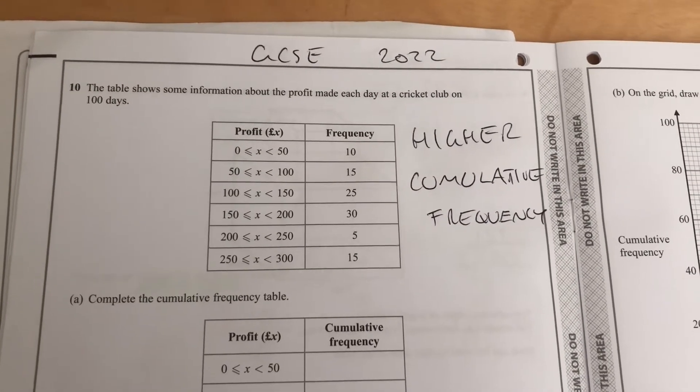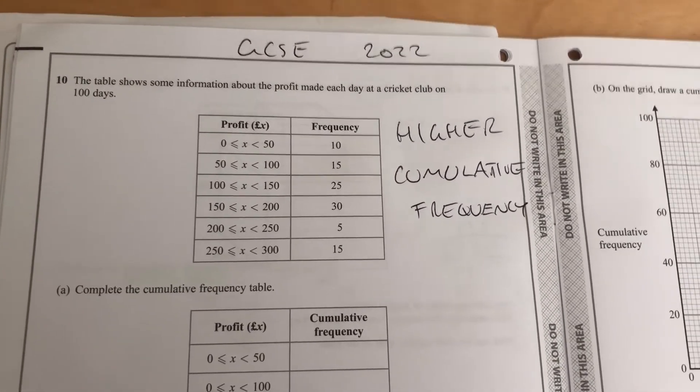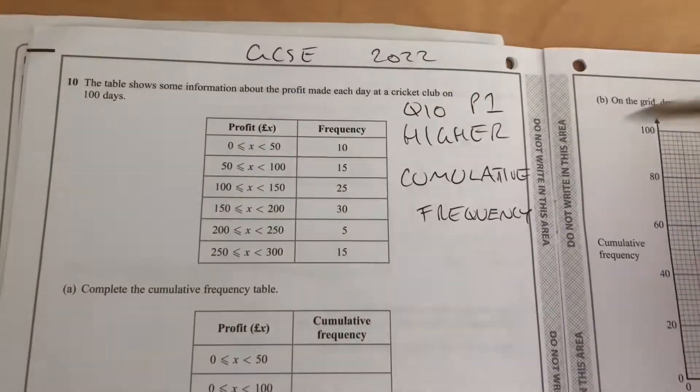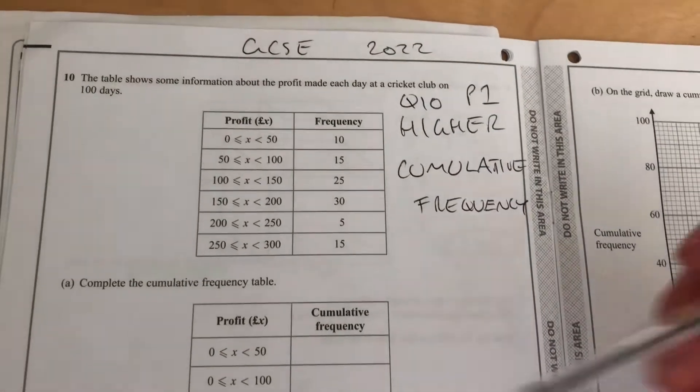Hello and welcome to Marta Maths. We're going through the GCSE 2022 papers. This is Higher Paper 1, Question 10, and it's a cumulative frequency table and graph.